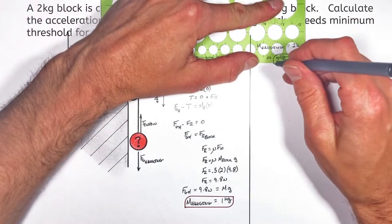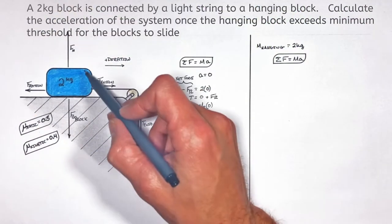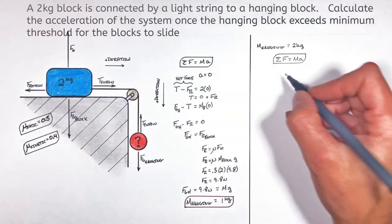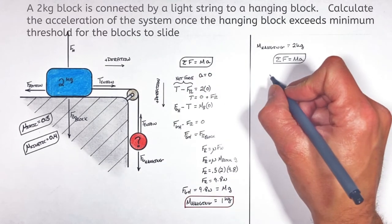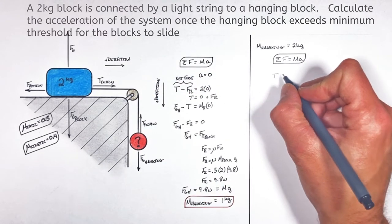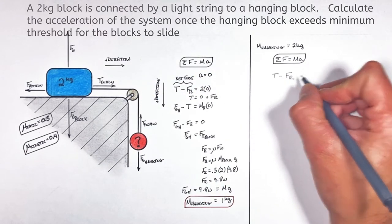So let's start by applying Newton's second law first to this block on the table right here. You see within the plane of motion or the direction of motion of the block, we have the tension acting forward and the friction force acting backwards.